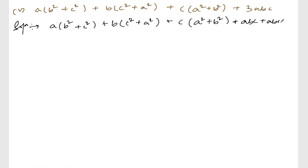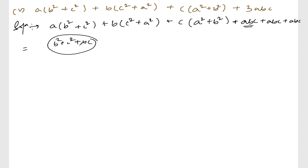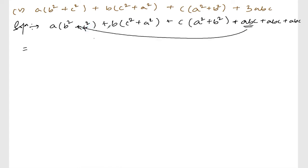Okay, now what's next? If I try to take abc common directly, for example taking 'a' common from the first group, it gives b² + c² + bc. But this doesn't match any standard formula, so we cannot directly factor abc from here like that.